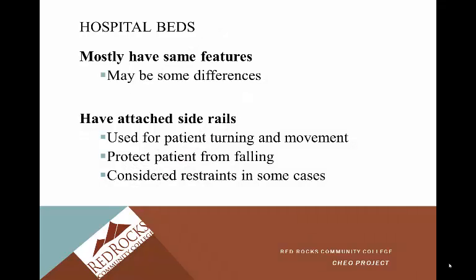Hospital beds. Most facilities have the same features for their beds, though there may be some differences. They have attached side rails, which are used for patients' turning and movement. They protect the patient from falling, but they are considered a restraint in some cases. In many cases, if you have all four side rails up, it is considered a restraint.